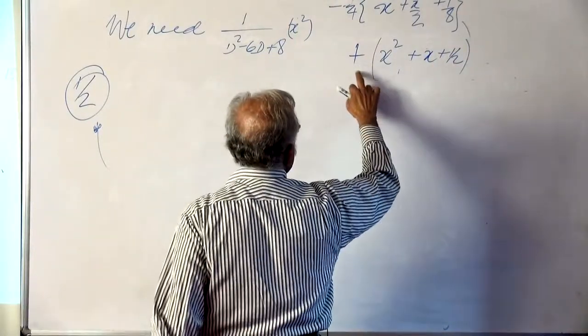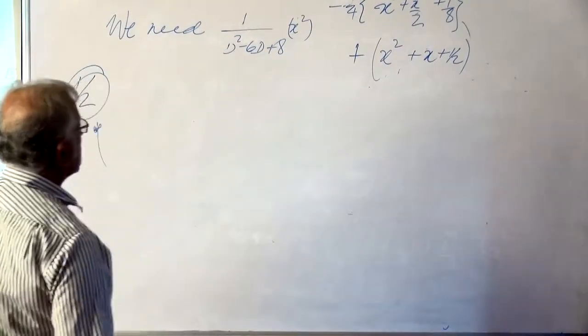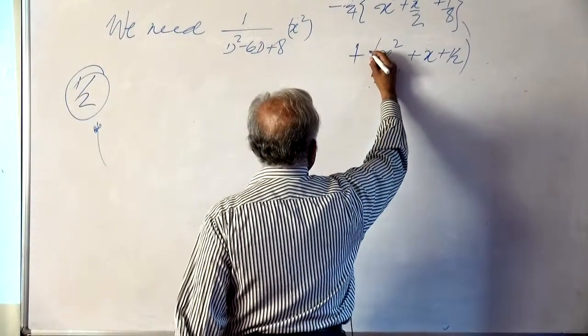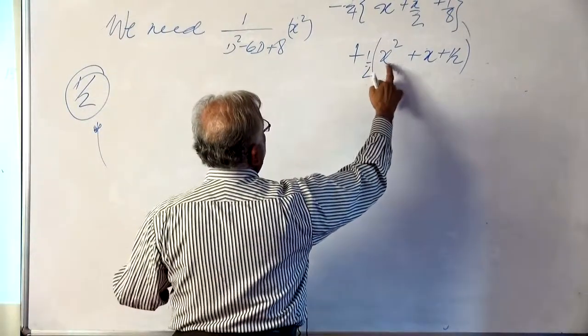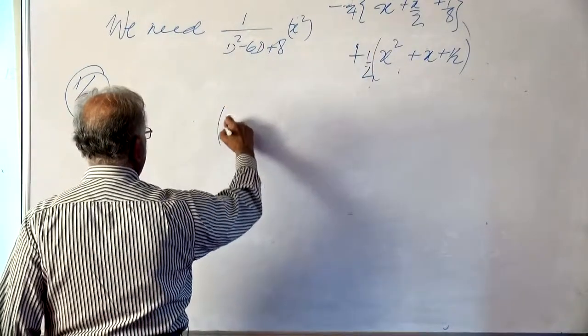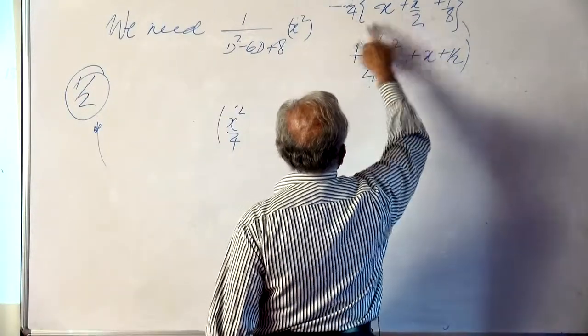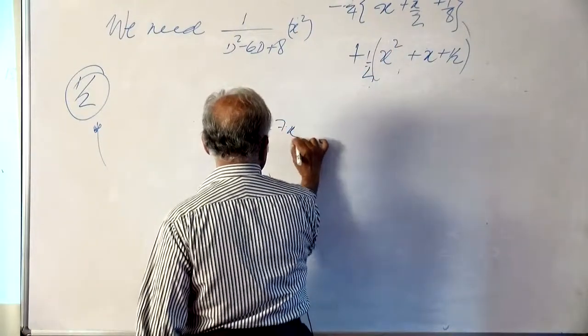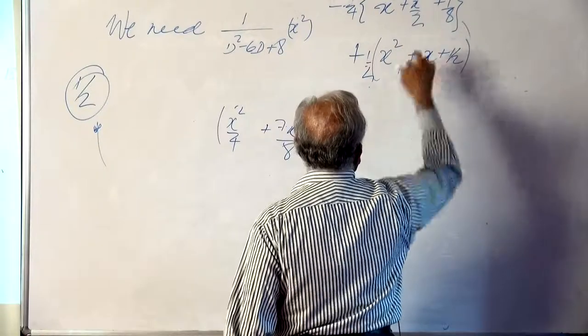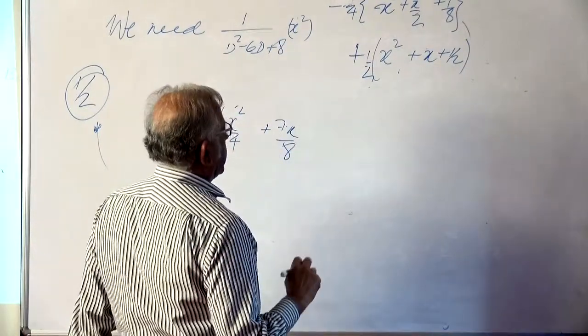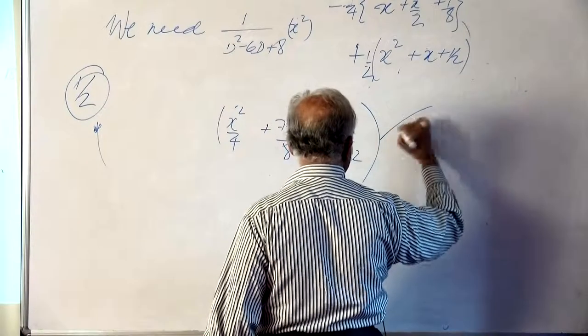When we combine: 1/2 x² plus x² gives x²/4; x minus x/8 gives 7x/8; and 1/4 minus 1/32 is 8/32 minus 1/32 which is 7/32. This is the particular integral required.